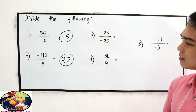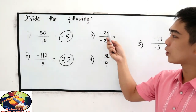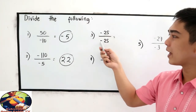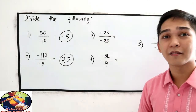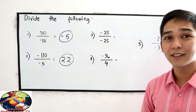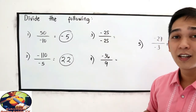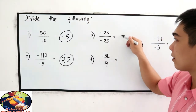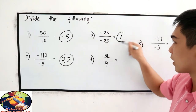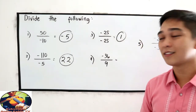Next: negative 25 divided by negative 25. Like signs, so the quotient is positive. 25 divided by 25 is 1, so positive 1.